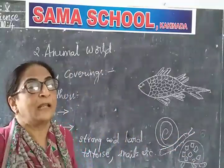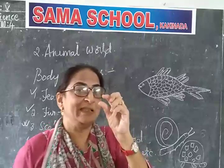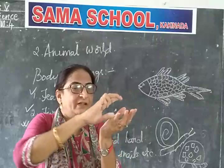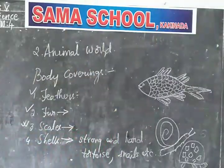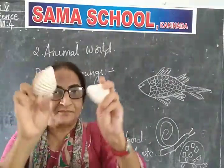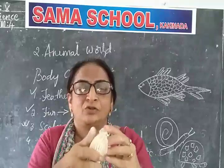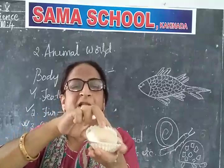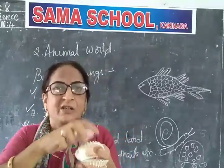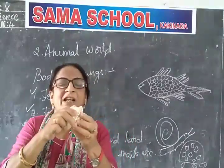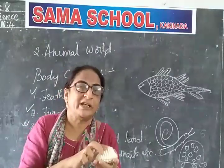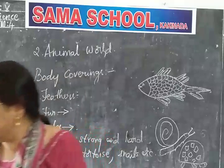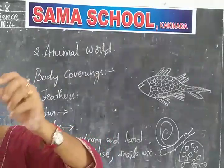We have oysters and clams. Pearls — do you know? Pearls are found inside the oysters. Two shell halves will be covered together like this. Inside there will be a small creature. This shell is very hard — it is an exoskeleton and it will protect the animal that is inside it. In the same way, pearls are also found in oysters.